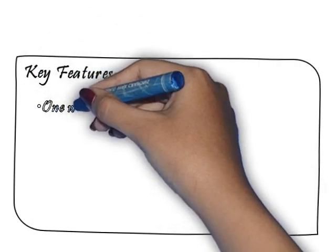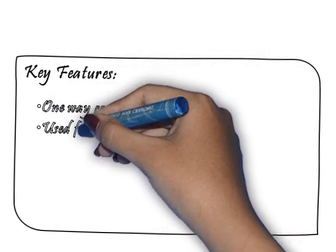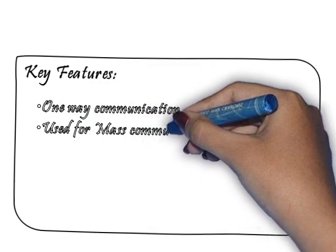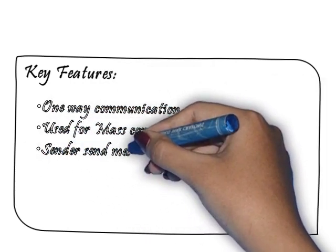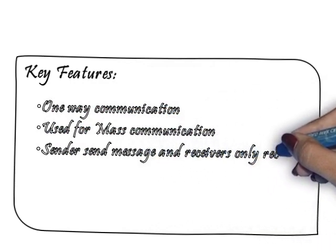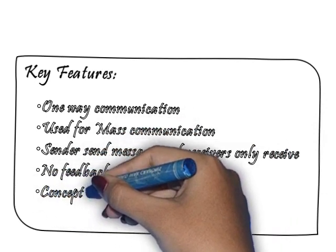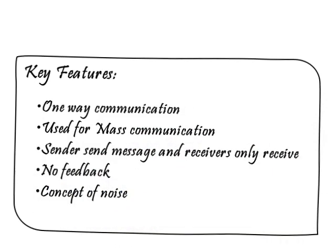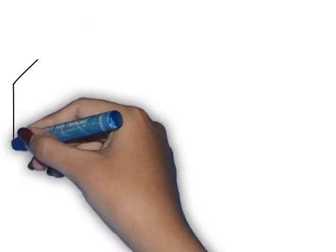When we talk about the key features of linear communication, there is no feedback in the process. The concept of noise is definitely present because the receiver doesn't have the opportunity to clarify things. They basically just receive information and absorb all the information being presented to them.